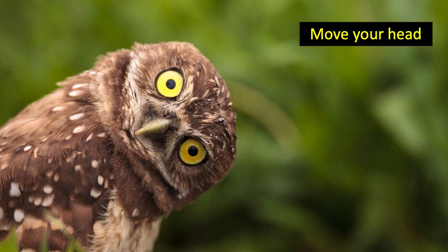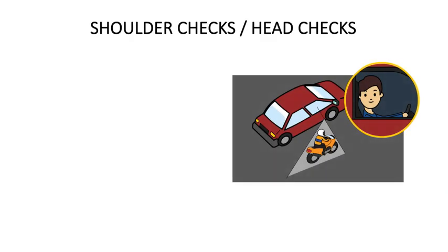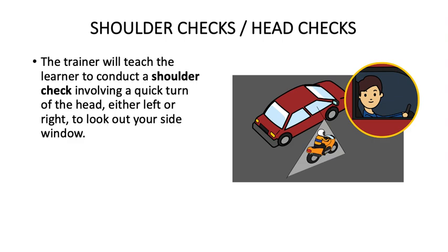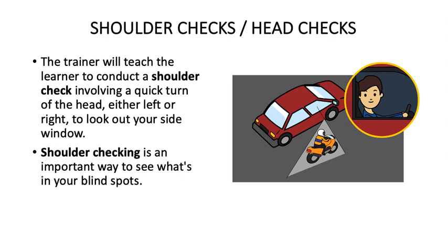Move your head — remember the owl. The owl has an amazing ability to rotate its head. When driving a car, truck, motorbike, or whatever, you need to move your head and scan the road environment. This includes shoulder checks, also known as head checks. The trainer will teach the learner to conduct a shoulder check involving a quick turn of the head, either left or right, to look out the side window. Shoulder checking is an important way to see what's in your blind spots.